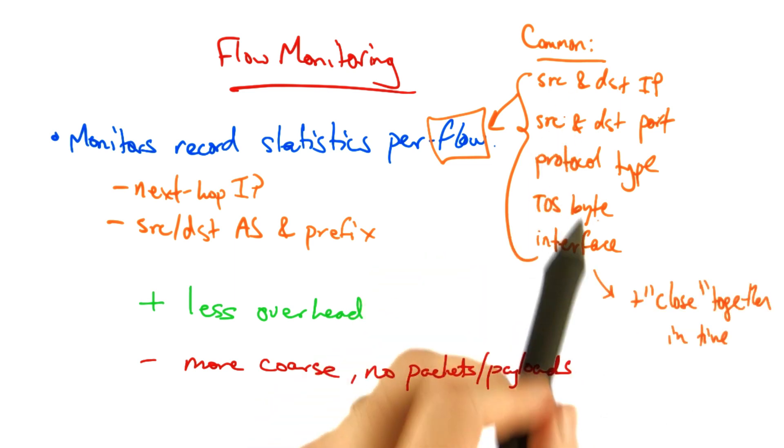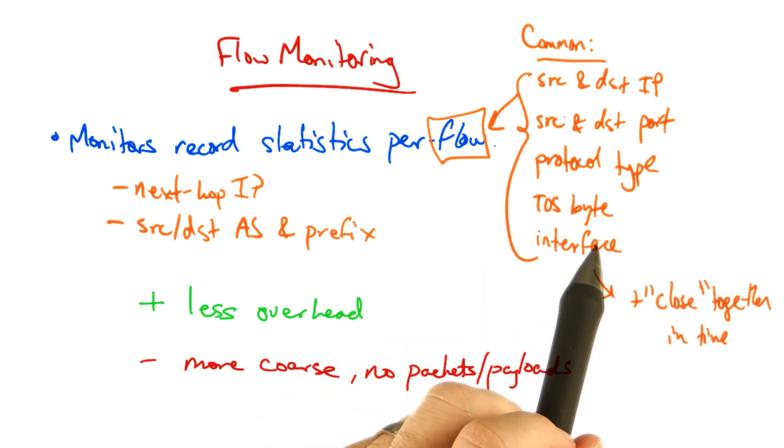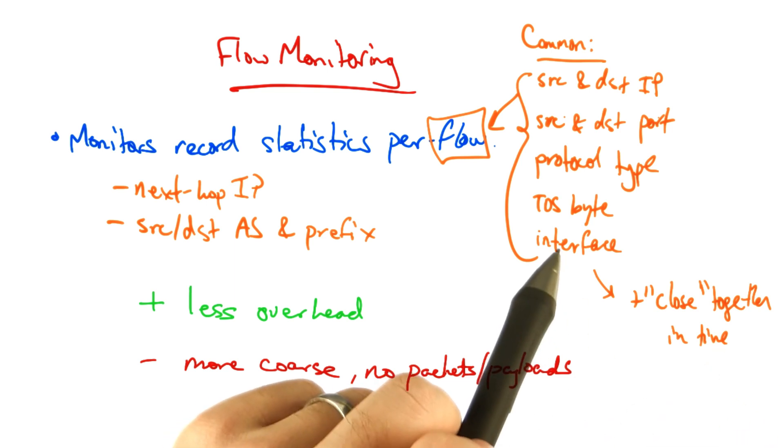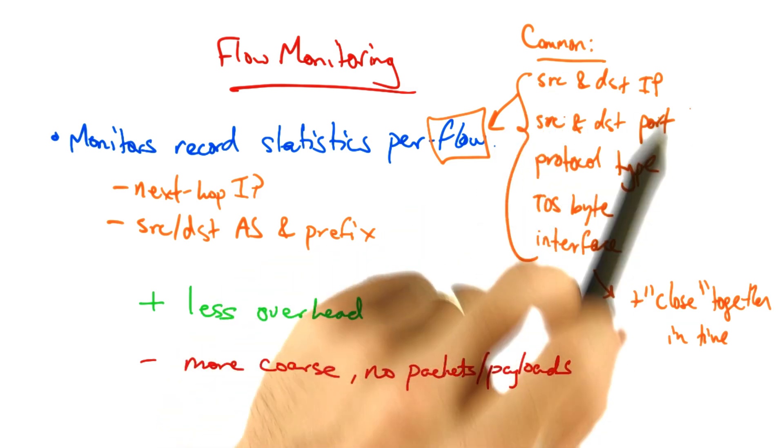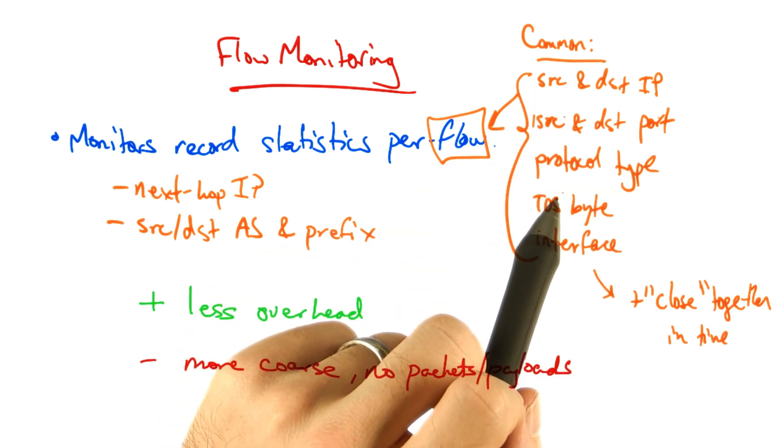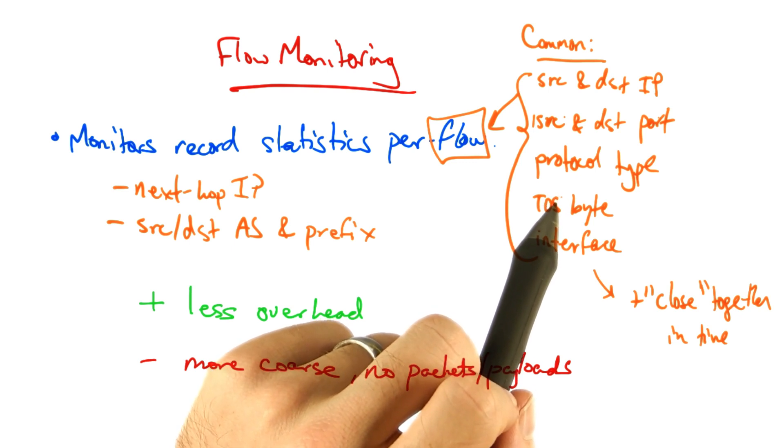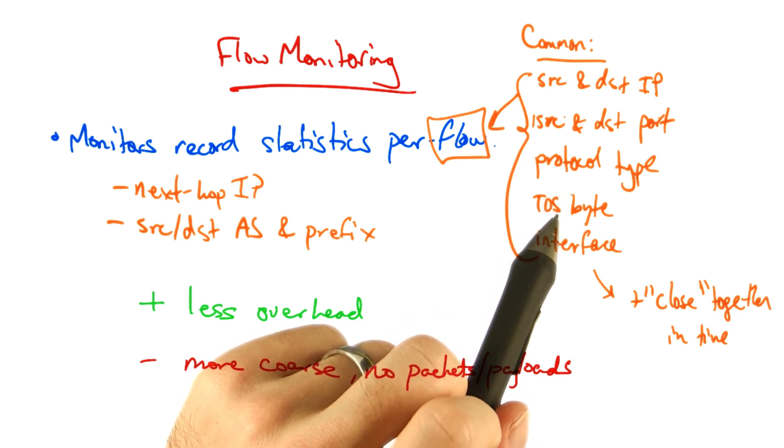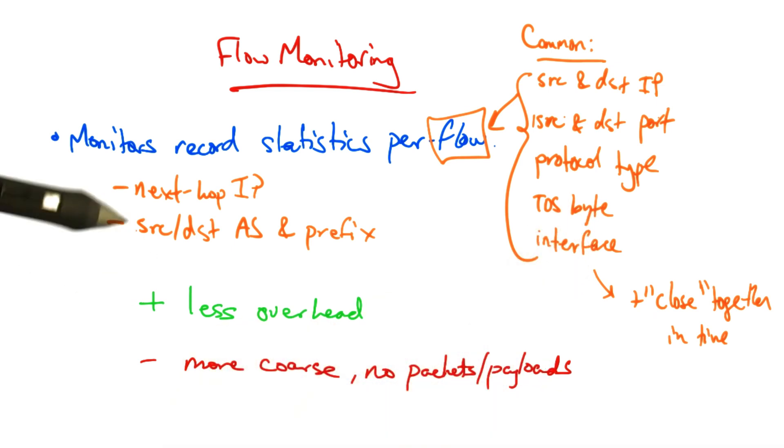In addition to grouping packets into flows based on the fact that they share common elements in their headers, typically packets are grouped into flows if they occur close together in time. For example, if packets that share common sets of header fields do not appear for a particular time interval, such as 15 or 30 seconds, the router simply declares the flow to be over and sends a flow record to the monitor based on the group of packets that it's seen up to that point.